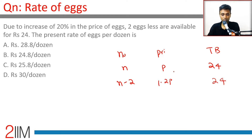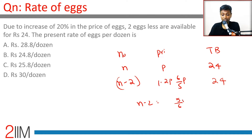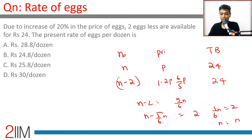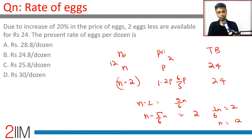The price is still 24. P becomes 6/5 P, so n should become 5/6 n — only then the product will remain the same. So n minus 2 equals 5/6 of n. Therefore n minus 5/6 n equals 2, meaning 1/6 of n is 2, so n is 12. You were originally buying a dozen eggs at Rs.2 per egg for Rs.24, or you can buy 10 eggs at Rs.2.4 per egg at the present rate.